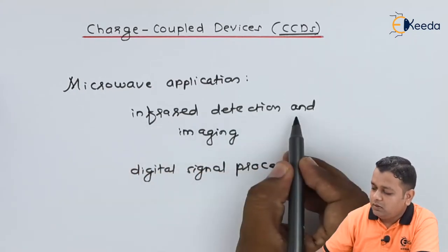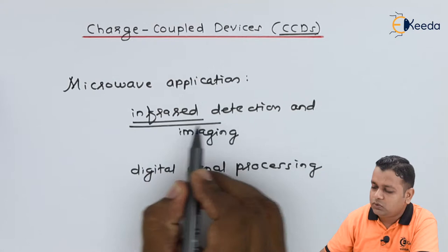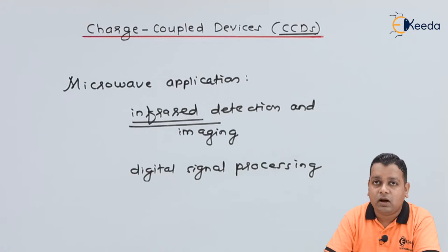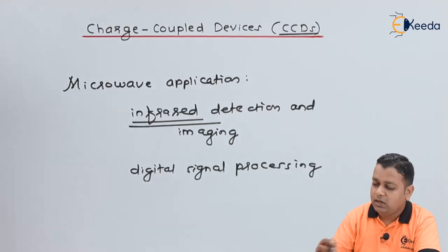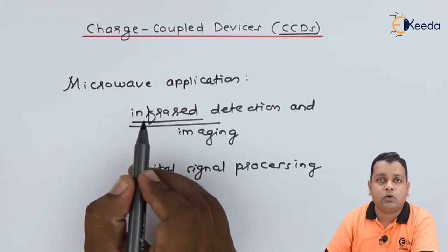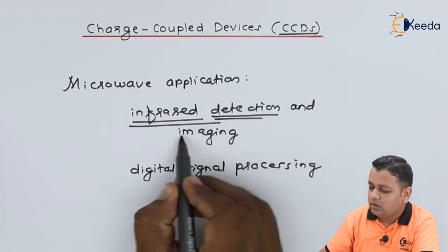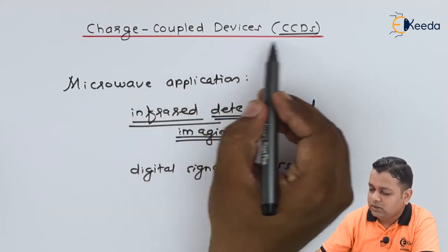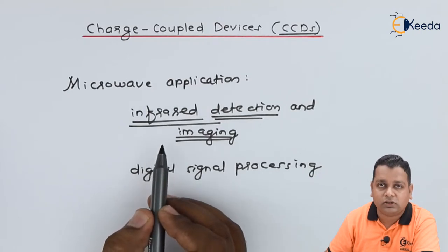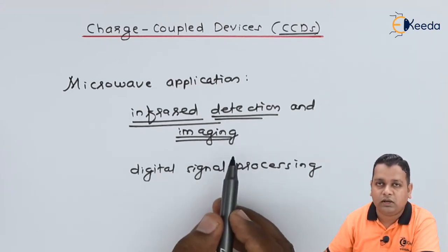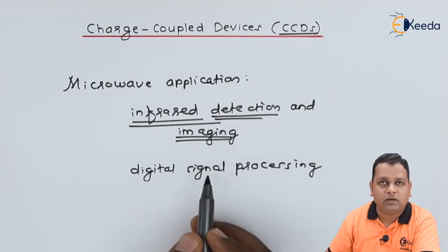When we talk about Infrared Detection and Imaging, infrared refers to a particular frequency range. As we know, for microwave, it is the electromagnetic wave having the frequency range from 1 GHz to 300 GHz. Infrared is also a frequency range near the optical range. On that particular frequency of signal, detection and further imaging is made possible, with CCDs working as sensors to acquire information in the form of an image. Digital signal processing will be addressed at the end.